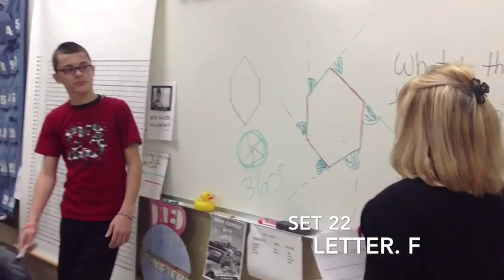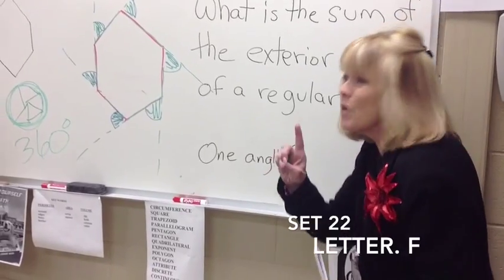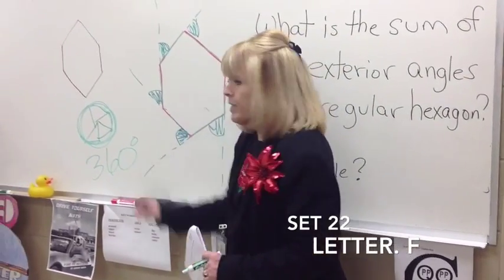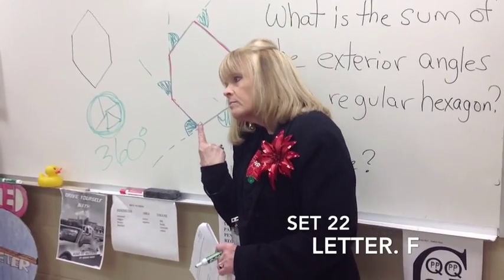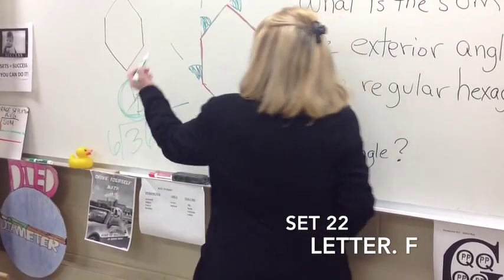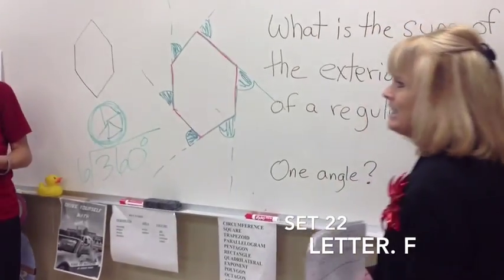That's the sum of the exterior angle. Then it'll say, what's the measure of just one of them? Well, if all six of them together is 360, how would you get just one? You divide by six. Divide that by six and you get 60. So each individual angle is 60 degrees.